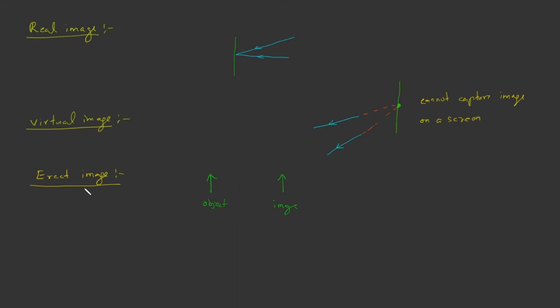The fourth term we are going to study is inverted image. In an inverted image, the image is upside down when compared to the object. That is, if the object is in a certain orientation, then the image will be upside down. This type of image is called an inverted image.